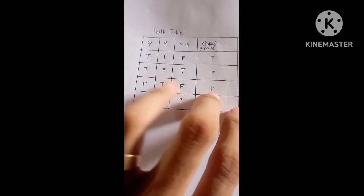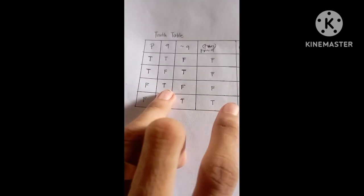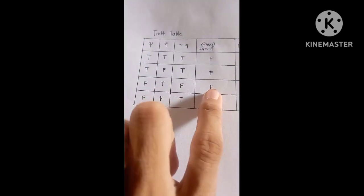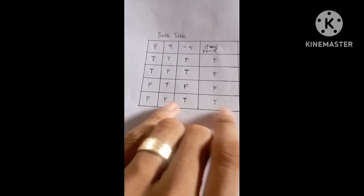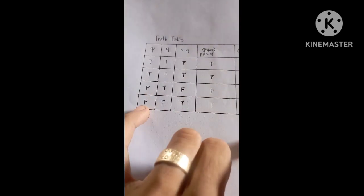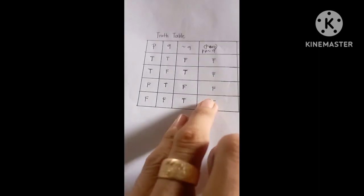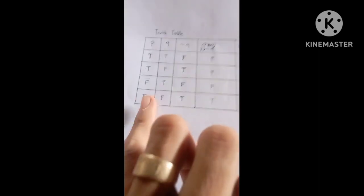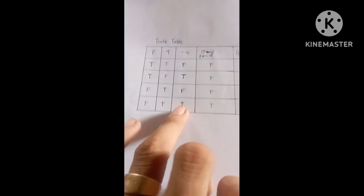And then if P is false and then the not Q is true, it is false. And then if they are false, and then if false and then true, it is true. If the P is false and then the not Q is true, it is true.